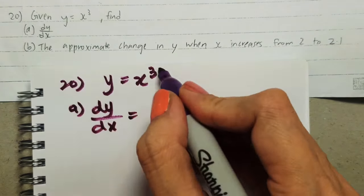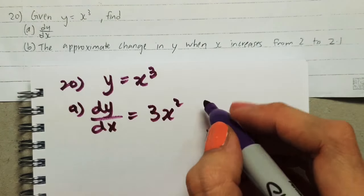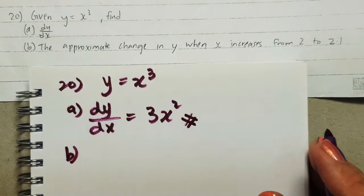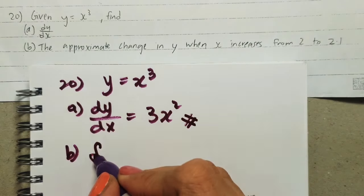Let's find part a first: dy/dx. This one is pretty easy. Just reduce the part, bring down the power, and reduce the power by one. That's it, we have just found dy/dx.